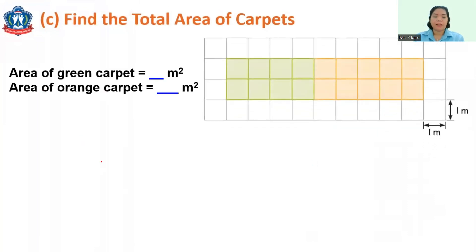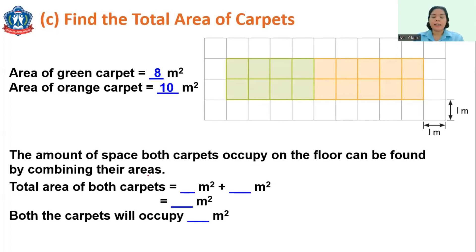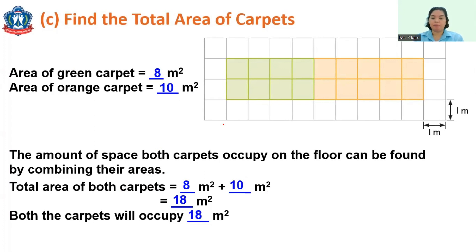Here is the calculation: the area of the green carpet is 8 square meters and the orange carpet is 10 square meters. We simply add them: 8 square meters + 10 square meters = 18 square meters. Both carpets together occupy 18 square meters. This is what we call area — the space occupied by a shape.